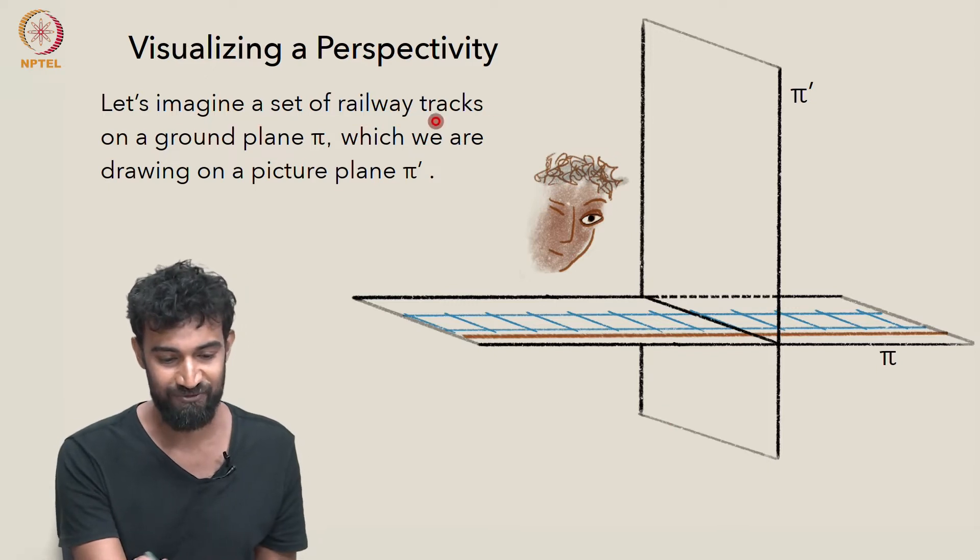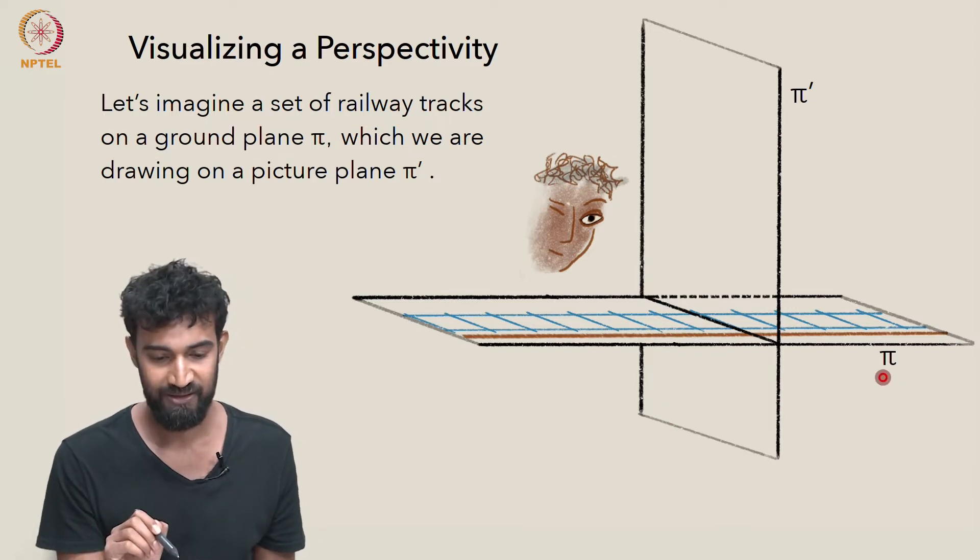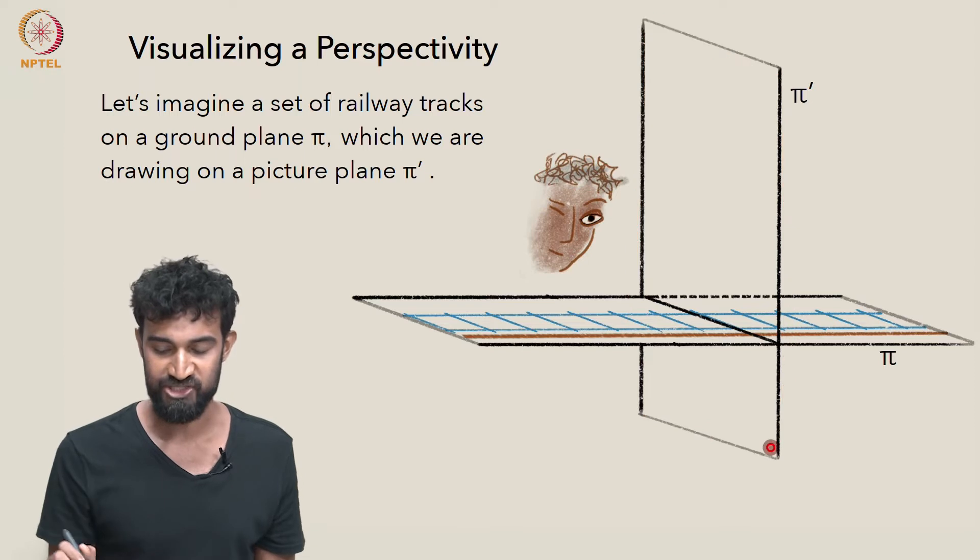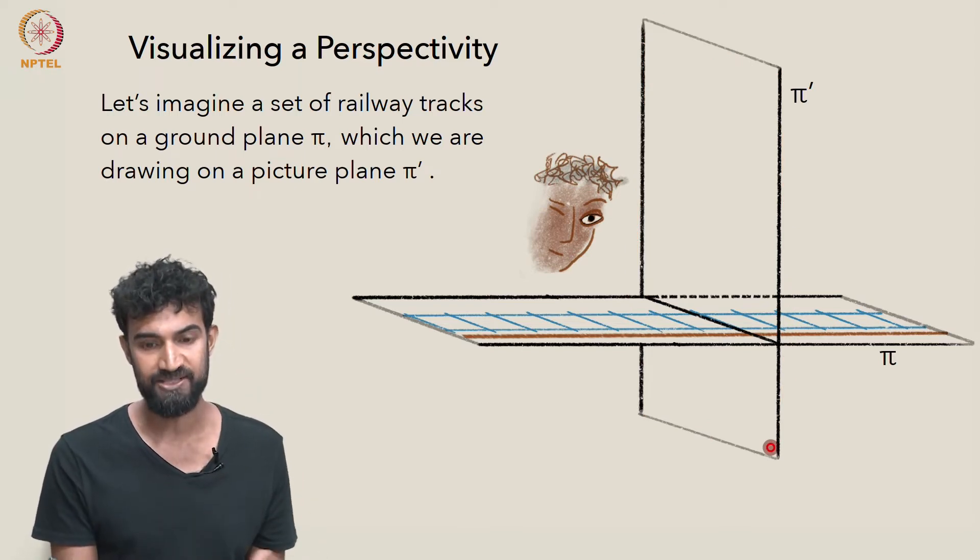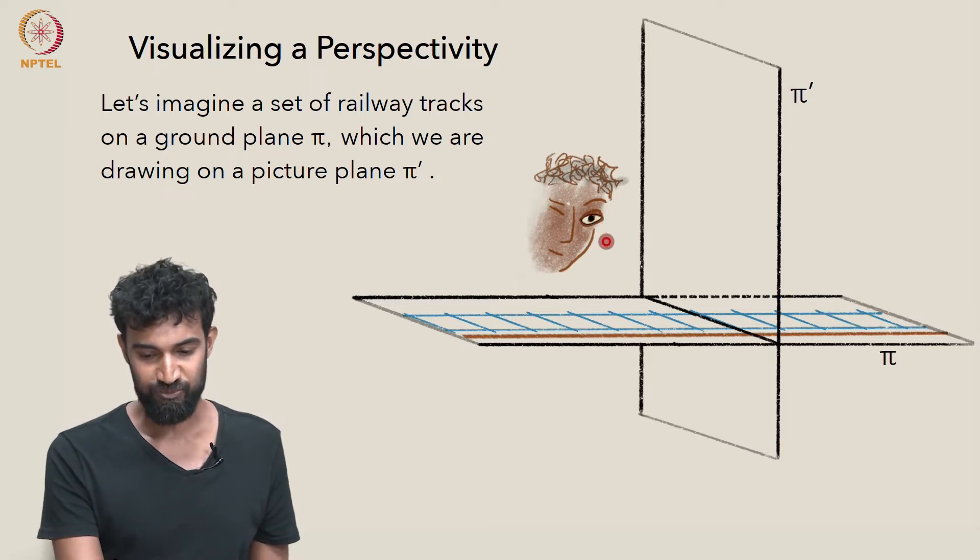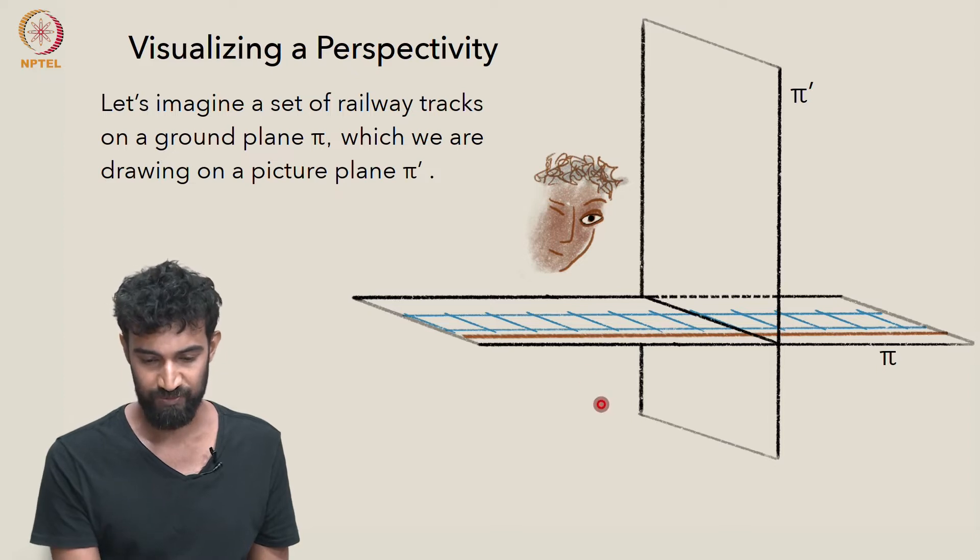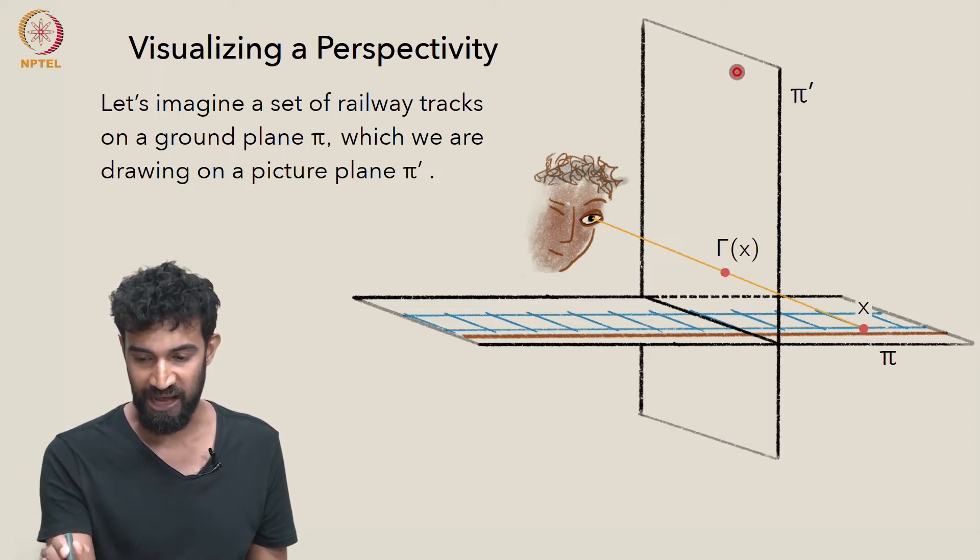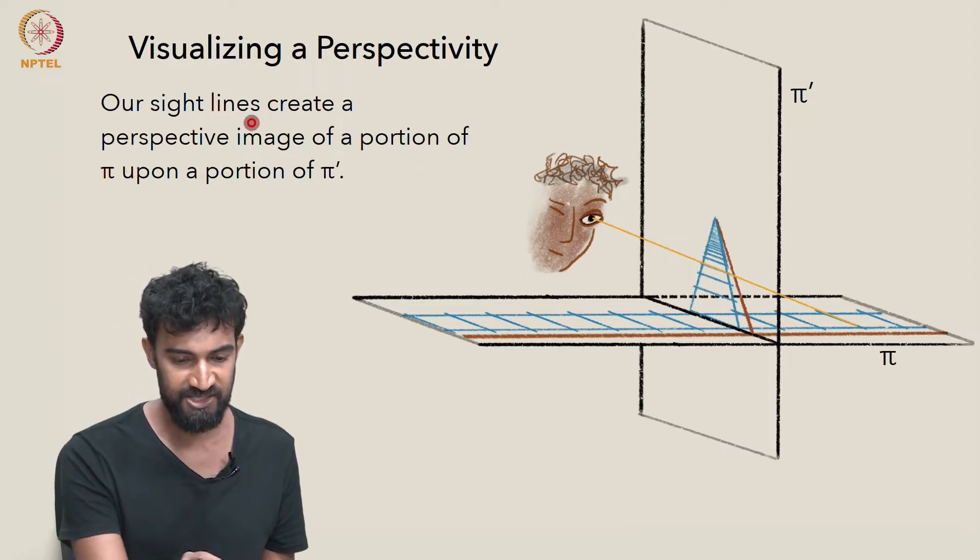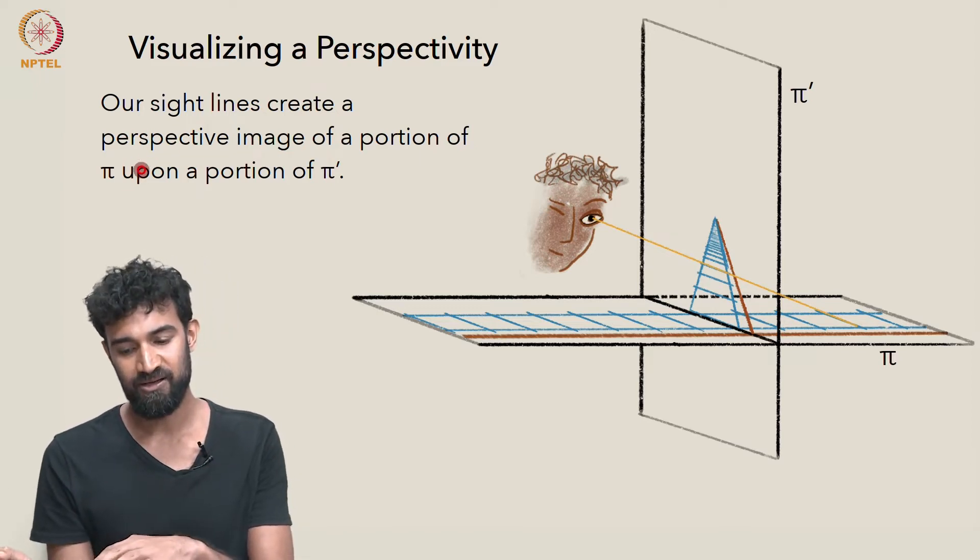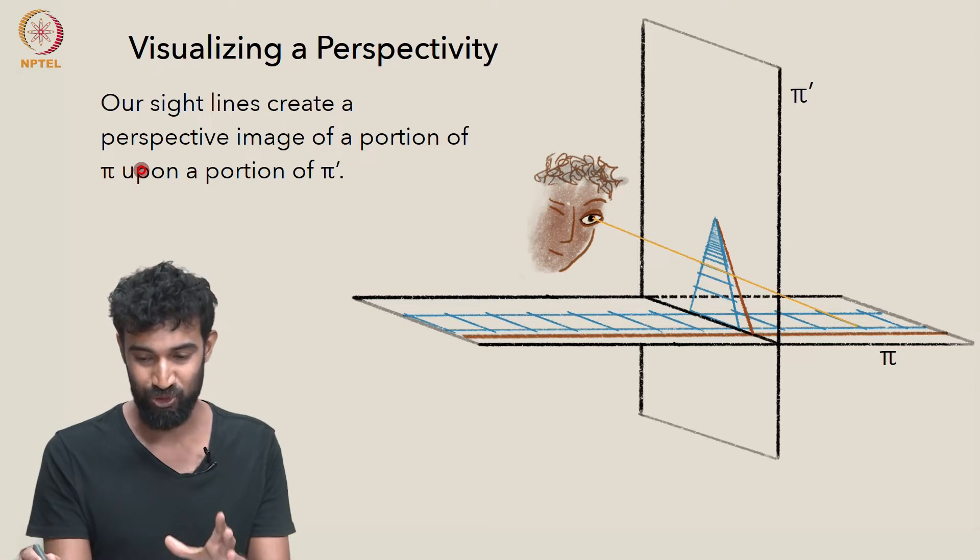So let's imagine a set of railway tracks on the ground plane, pi. And imagine that we are drawing on a picture plane, pi prime, which is kind of perpendicular to the ground and to the railway tracks. And our eye is kind of a center of perspectivity, O, as well. So here's a point x on pi, and it maps to a point gamma of x on pi prime. And our sight lines create a perspective image of a portion of pi upon a portion of pi prime.